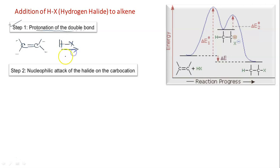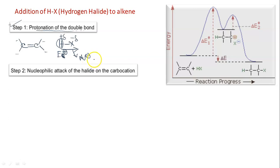First there will be protonation of the double bond. That means this H will act as the electrophile, because we are talking about electrophilic reaction. Our reagent is HX, and in HX, the positive part is H. You can consider it as if there is partial positive charge on H and partial negative charge on X. This part is actually our electrophile, and this is the negative part of the reagent - we should not call it nucleophile. The actual electrophile is E plus.